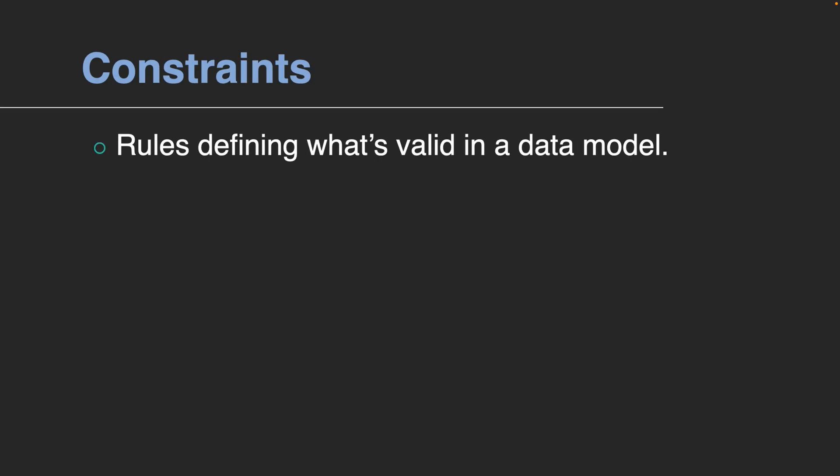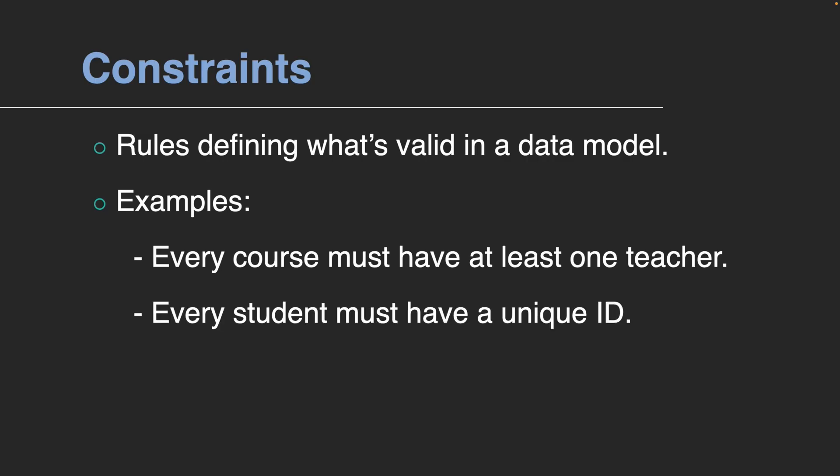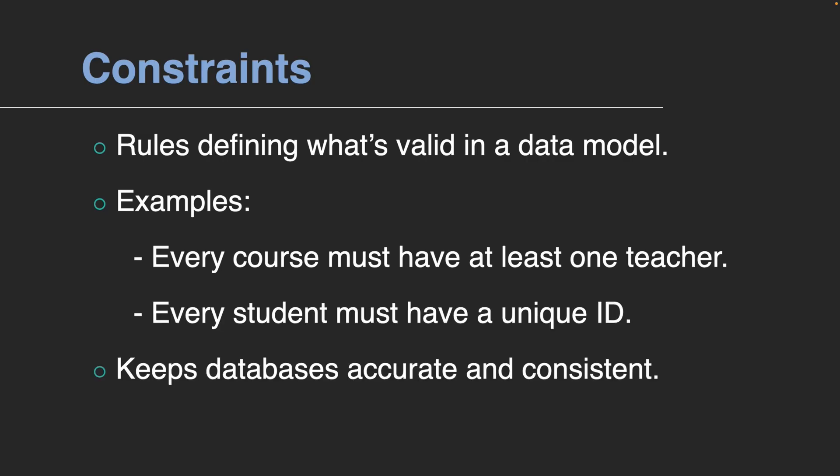Constraints are the rules that define what's valid in our data model. For example, every course must have at least one teacher, or every student must have a unique ID. These rules keep the database accurate and consistent.